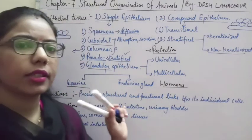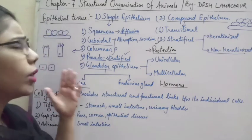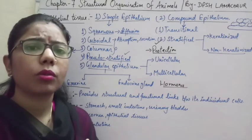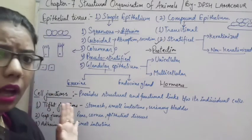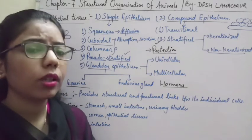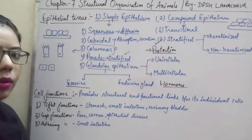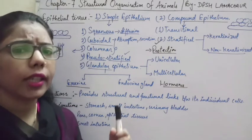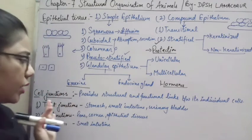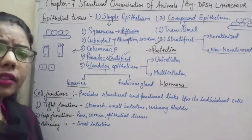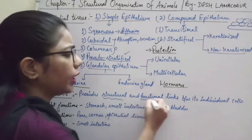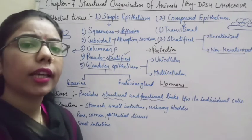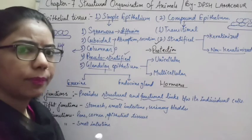Whether epithelial, muscular, or neural tissue, they all have cell junctions. Connective tissue, however, does not require junctions as it is useful for connection itself. Cell junctions provide structural and functional links between cells — they provide a linking structure from one cell to another.